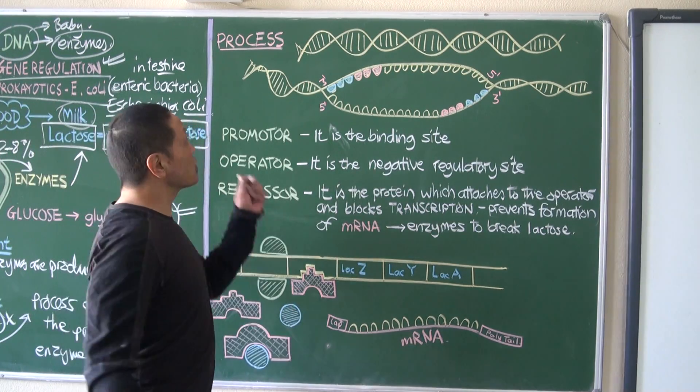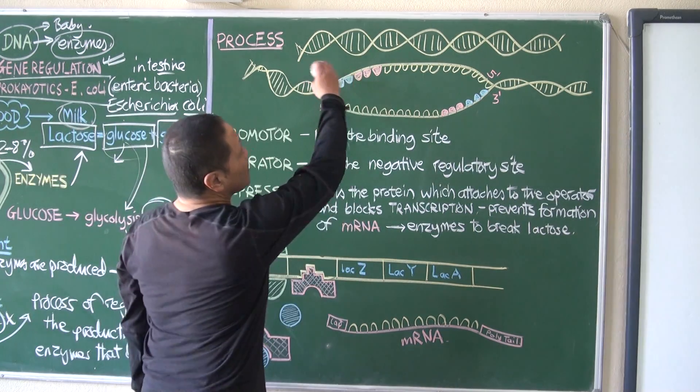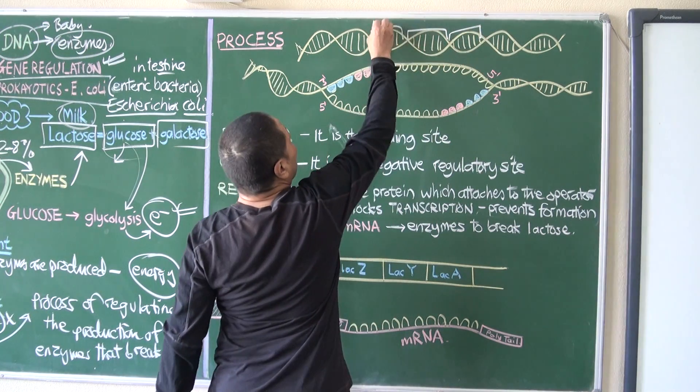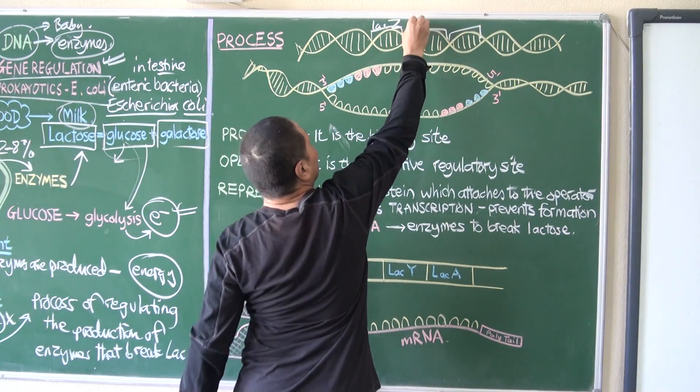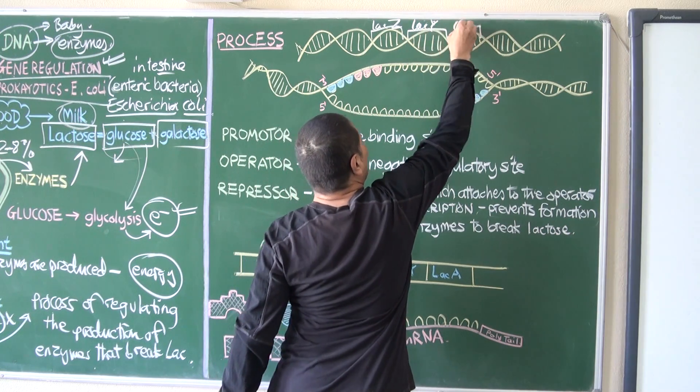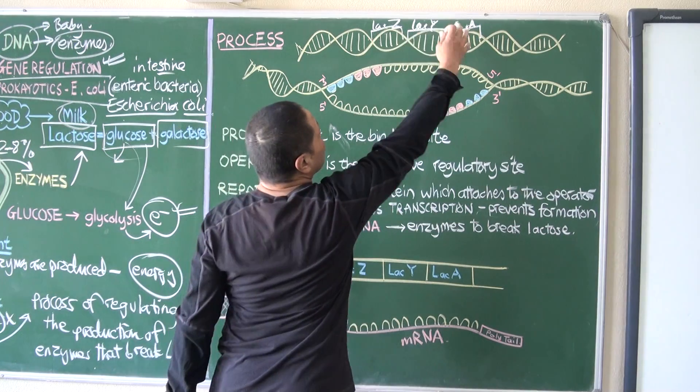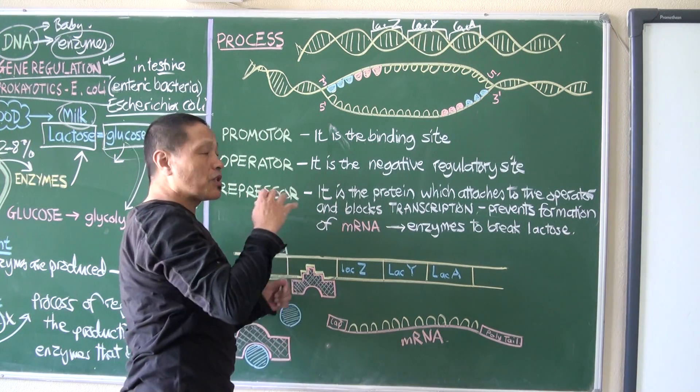So the process: we know that DNA has segments which need to be copied, and we know that it is like Z, like Y, like E - these are the codes that actually produce enzymes which can break lactose. So when lactose is present in food, then it activates the production of an mRNA.